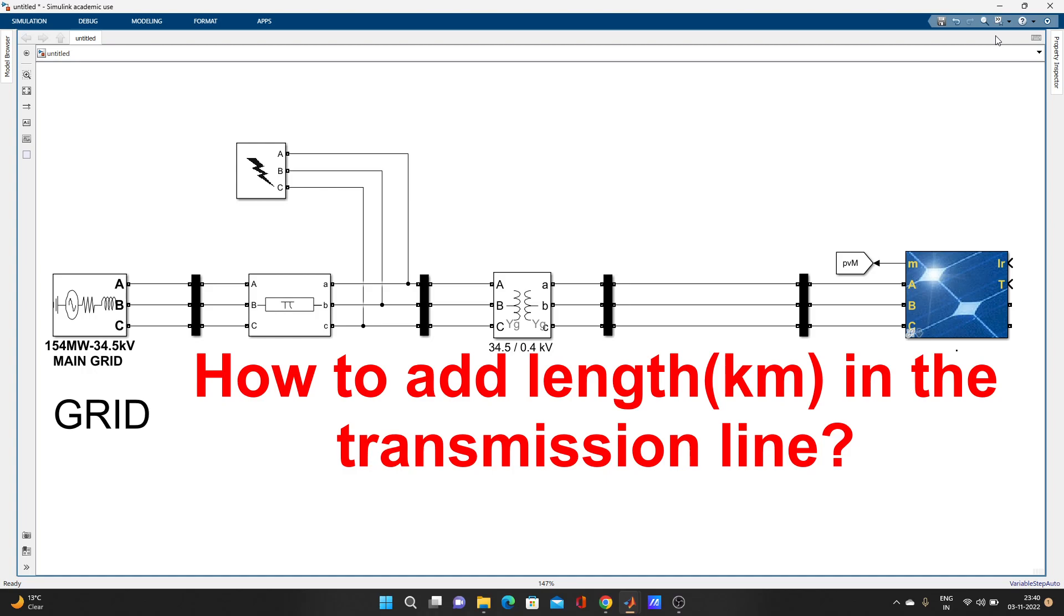We will add transmission line length, suppose 1 km, 2 km, 3 km, like that. You can add whatever you need for your model. I have already added this transmission line here. You can see this one.